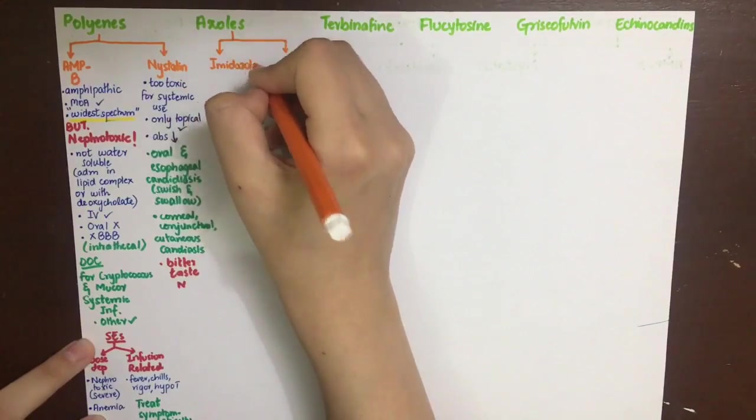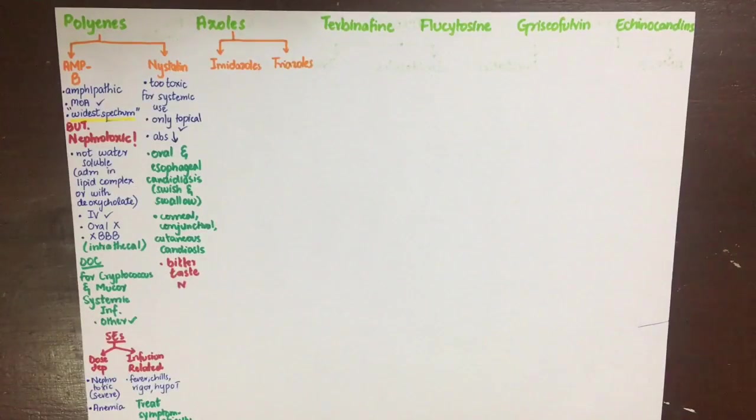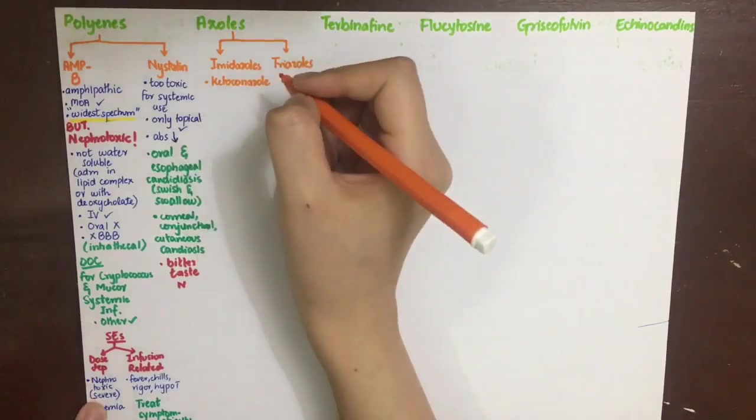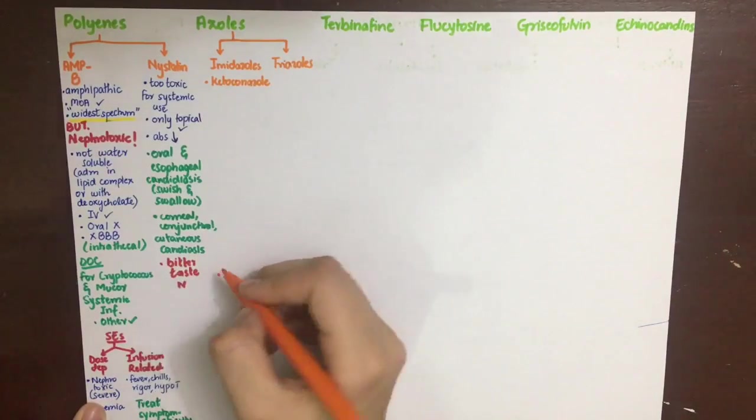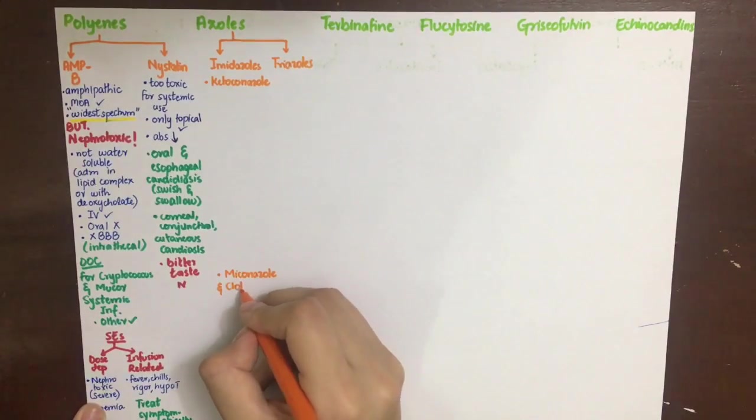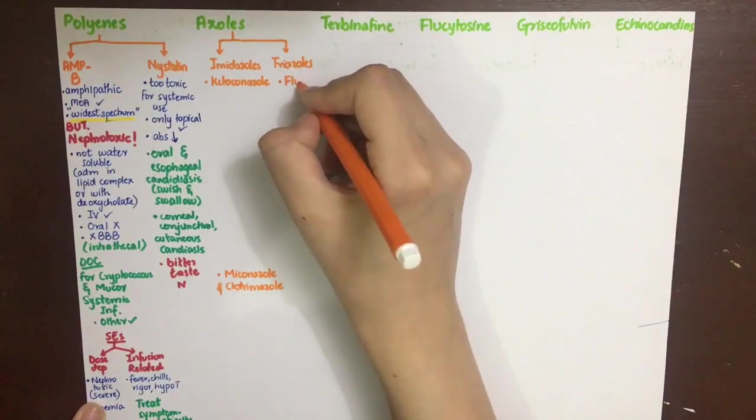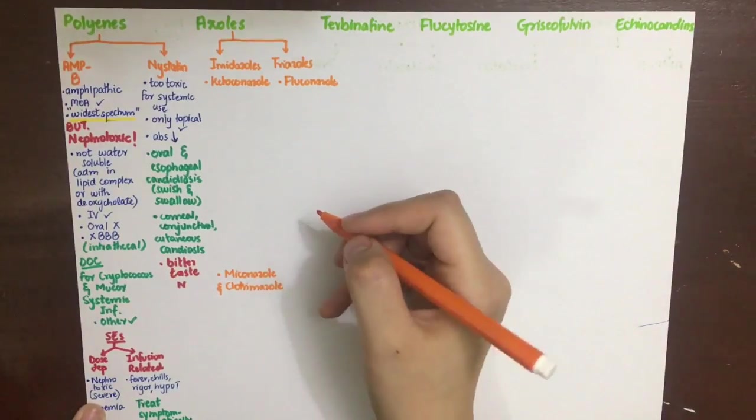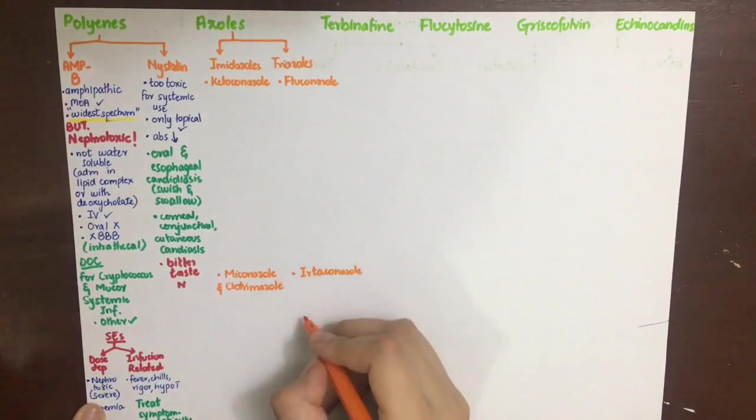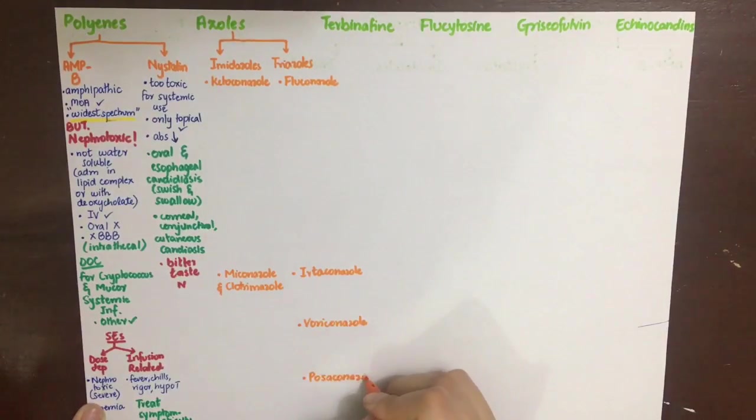Coming to the azoles, they are classified into imidazoles and triazoles. The imidazoles comprise ketoconazole as the prototype, miconazole, and clotrimazole. The triazoles comprise fluconazole (the most important one), itraconazole, voriconazole, and posaconazole.